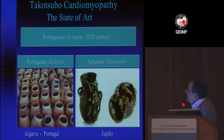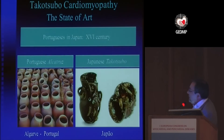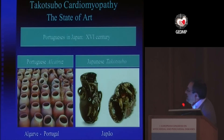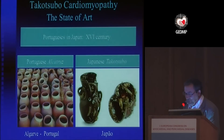The reason I don't like the term 'takotsubo cardiomyopathy' is because the real name is 'Alcatruz' — the Portuguese brought this octopus trap to Japan in the 16th century. Thank you.